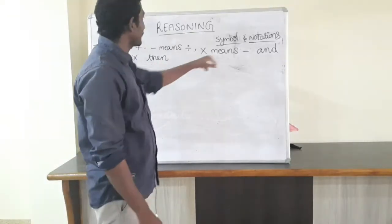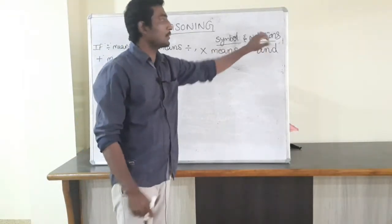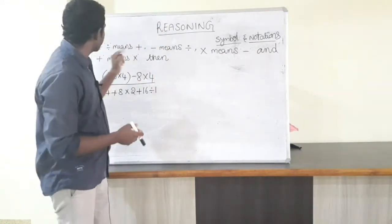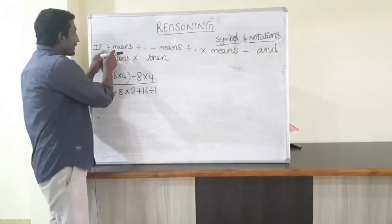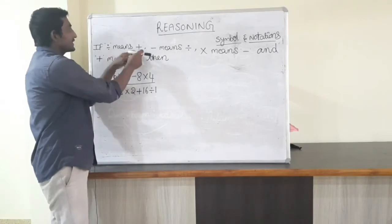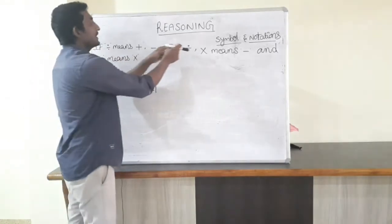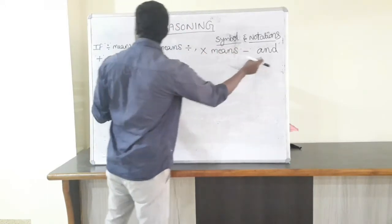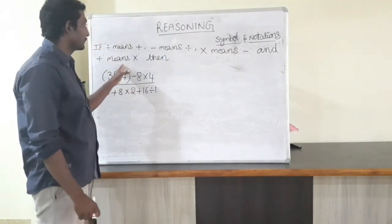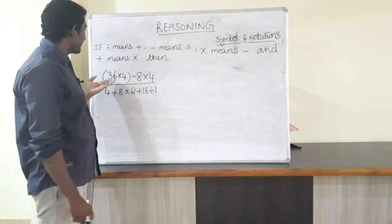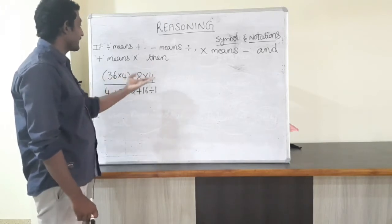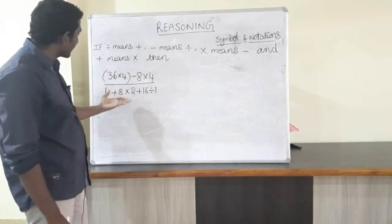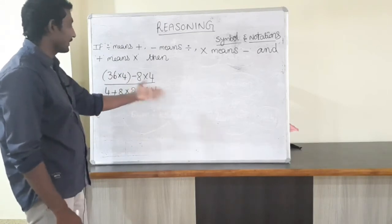This is one of the questions from the chapter Symbols and Notations. Now see the question. Divided by means plus, minus means divided by, into means minus, and plus means into. Then: 36 into 4 minus 8 minus 4 divided by 4 plus 8 into 2 plus 16 divided by 1.